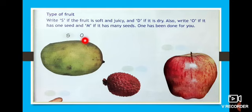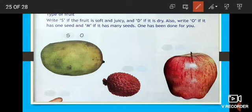Now we are going to do the next one. What is this? Litchi. Very good. Litchi fruit. It is soft and juicy, so you have to write S in the circle. And this fruit has only one seed, so we have to write O.